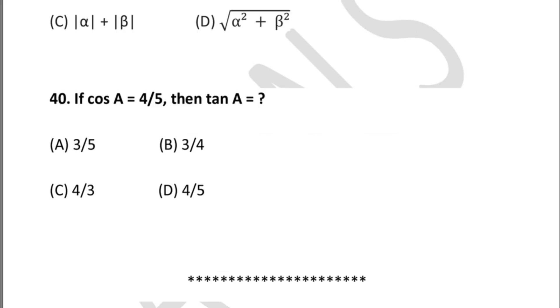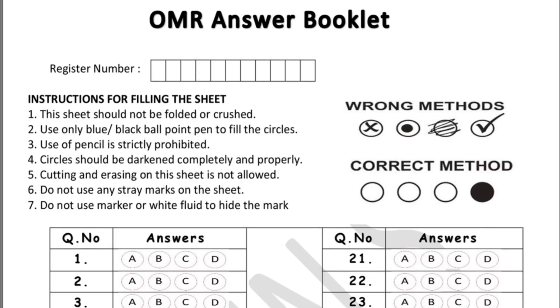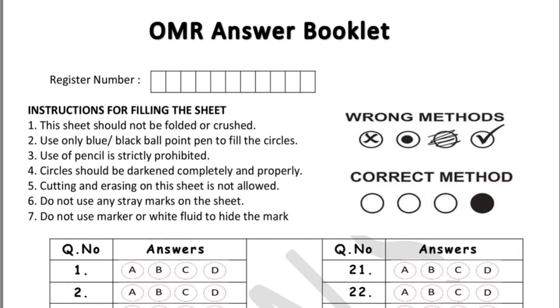Now we will see the important part — after you know the correct answer, in the examination an OMR answer booklet will be given. We'll see how to fill it. Observe the pictures showing the wrong methods and correct methods of shading. An 11-digit register number will be given for your exam.